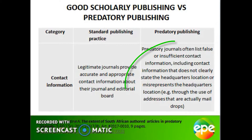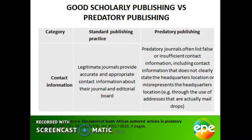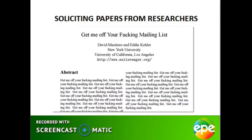Predatory journals often use generic email addresses as contacts, for both the journal as well as editorial board members. They often do not have a physical address, and where one is provided, using Google Maps can assist in establishing the validity of the journal. Frustrated with being spammed by requests for publication, two researchers submitted an article to the International Journal of Advanced Computer Technology. The article was reviewed as excellent and accepted for publication, for which a fee of $150 was requested.